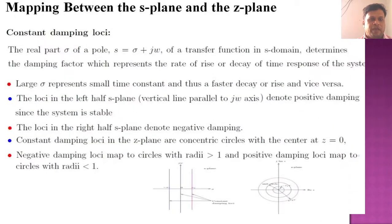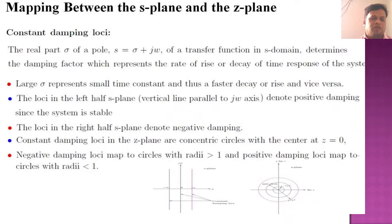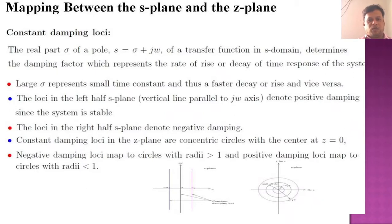Now, mapping between the s-plane and z-plane — we will look at constant damping loci. s equals sigma plus j-omega of a transfer function in the s-domain determines the damping factor, which represents the rate of rise or decay of the time response. A large sigma represents a small time constant and faster decay or rise, and vice versa. The loci in the left half of the s-plane — vertical lines parallel to the j-omega axis — denote positive damping since the system is stable.